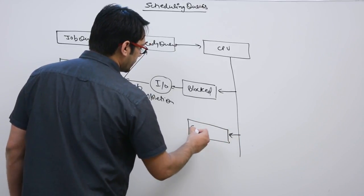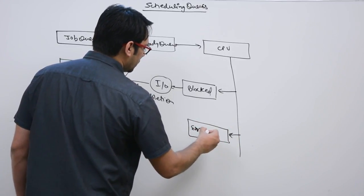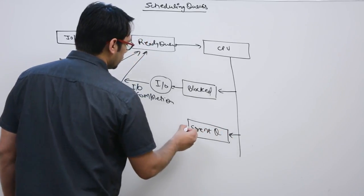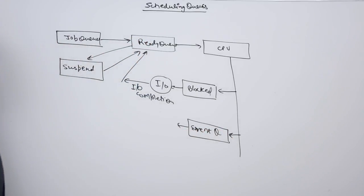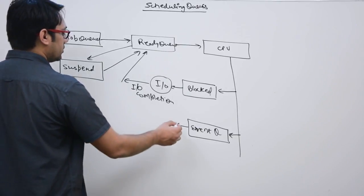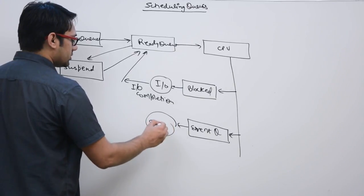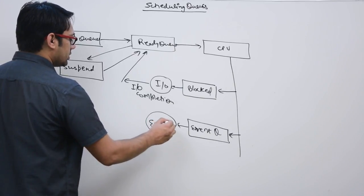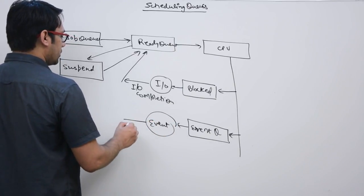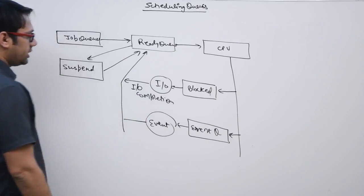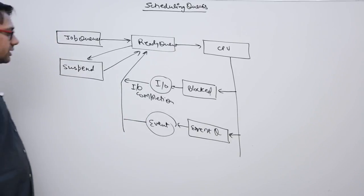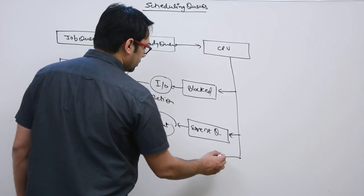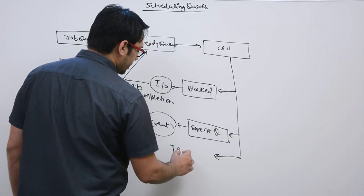If some kind of event occurs, we have an event queue to manage it. An event can be anything — for example, a mouse click, a key press, or something similar. When this event occurs and completes, the process can again go back to the ready queue.